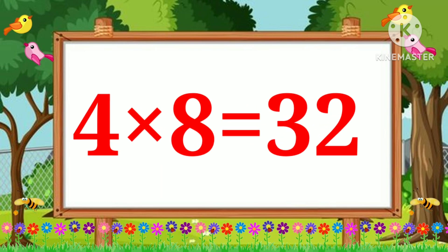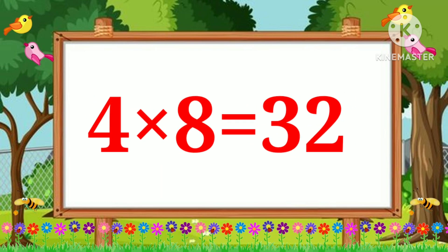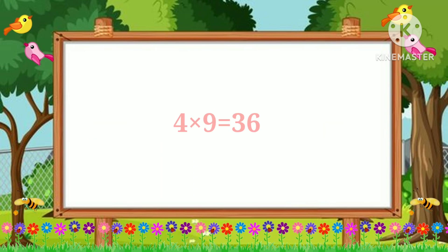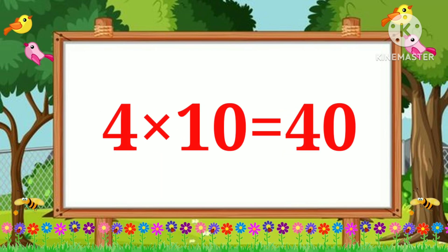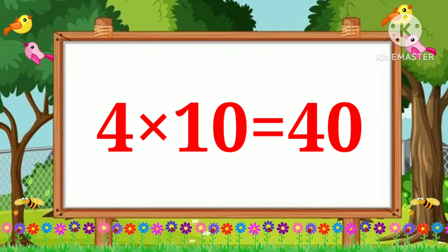Four eights are thirty-two. Four nines are thirty-six. Four tens are forty.